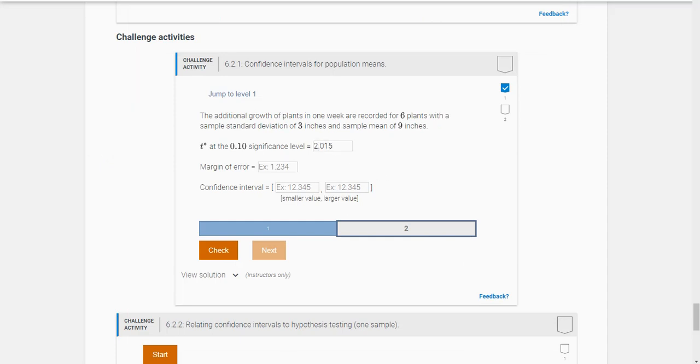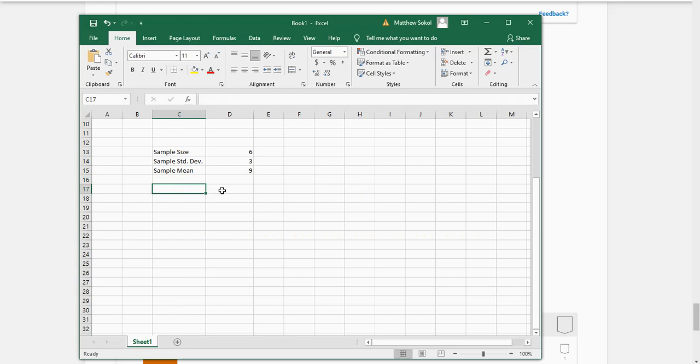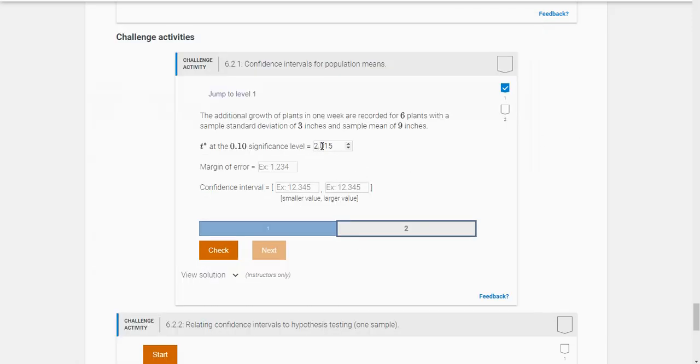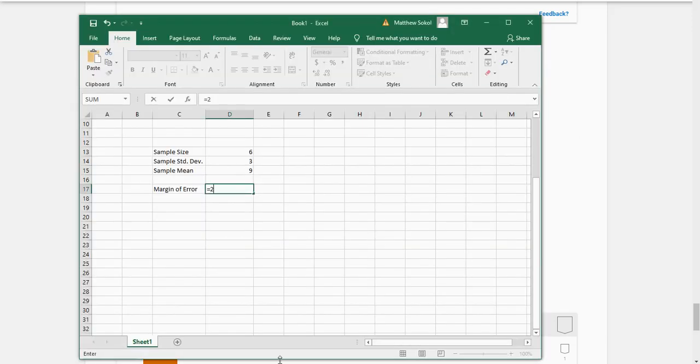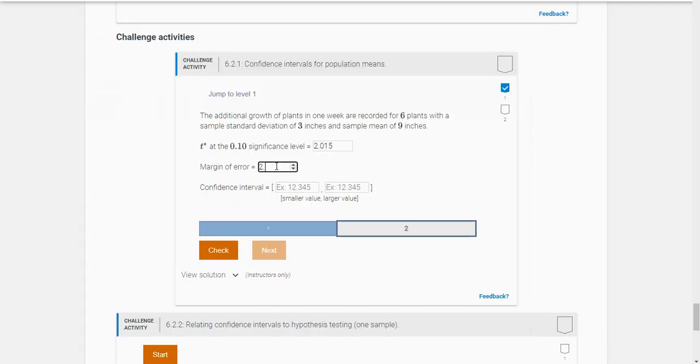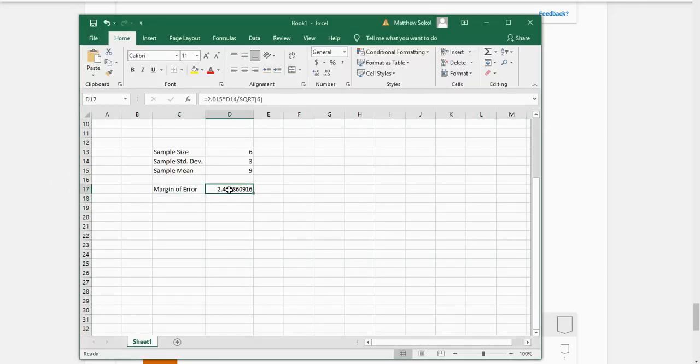Now what is the margin of error here? Well it's basically the same thing. It's your critical value, 2.015, times the standard deviation divided by the square root of the sample size, which was six again. So our margin of error looks like 2.468 when we round it.